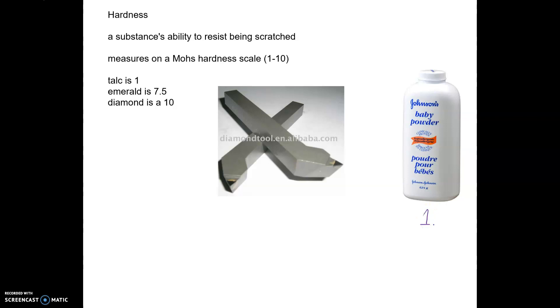Baby powder is considered a 1. There's no hardness at all, whereas a diamond is a 10. So if you know much about cutting glass, those who cut glass are going to use a diamond tip tool so that they can cut it.